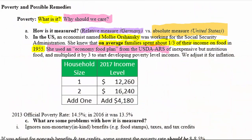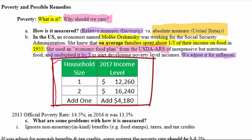Once Molly Orshansky figured out how much a family could spend on low-cost yet nutritious food, she calculated that amount and multiplied it by three to develop an income level guideline for determining who is living in poverty. Since then, we've basically adjusted these numbers for inflation. Ever since she completed this work around 1960–1961, we've adjusted it for the cost of inflation over the years. In 2017, the numbers look like this to give you a feel for it.